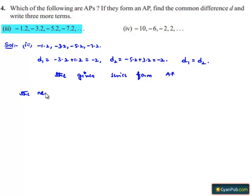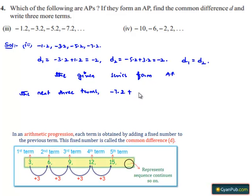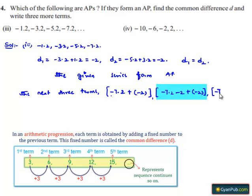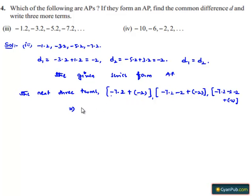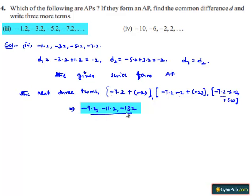The next three terms can be obtained by adding the common difference to consecutive terms. Starting from minus 7.2, adding the common difference of minus 2 gives minus 9.2; adding minus 2 again gives minus 11.2; and adding minus 2 once more gives minus 13.2. Therefore, the required three terms are minus 9.2, minus 11.2, and minus 13.2.